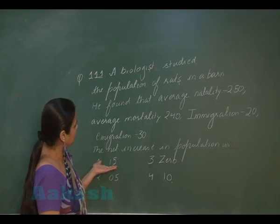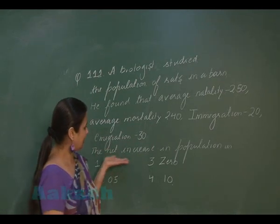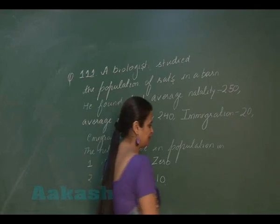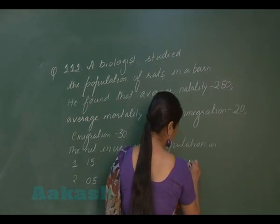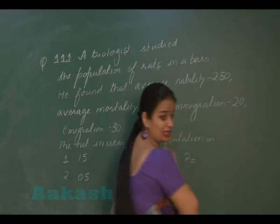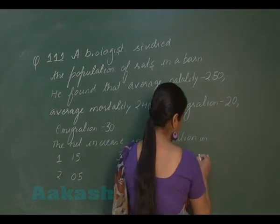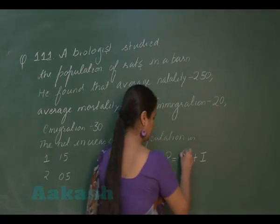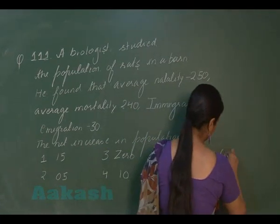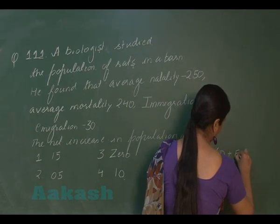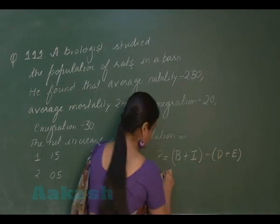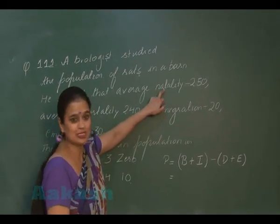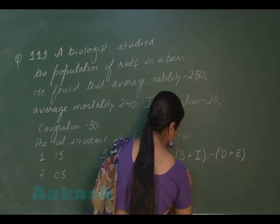In question number 111, we have to see the net increase in the population of rats. For finding the increase in population, the formula utilized is number of births plus number of immigrants minus number of deaths and number of emigrants. In this case, natality is 250, so the number of births is 250.